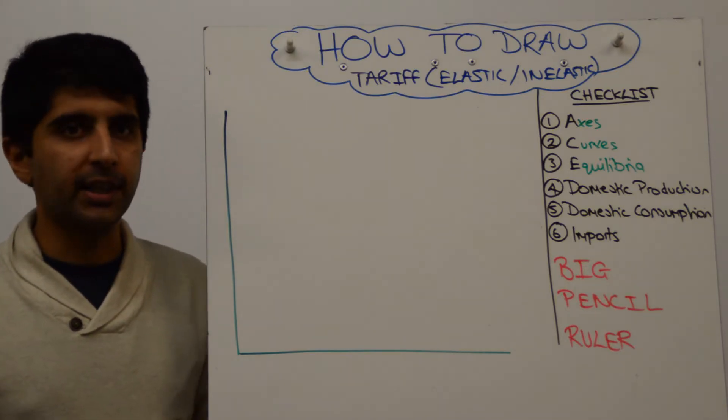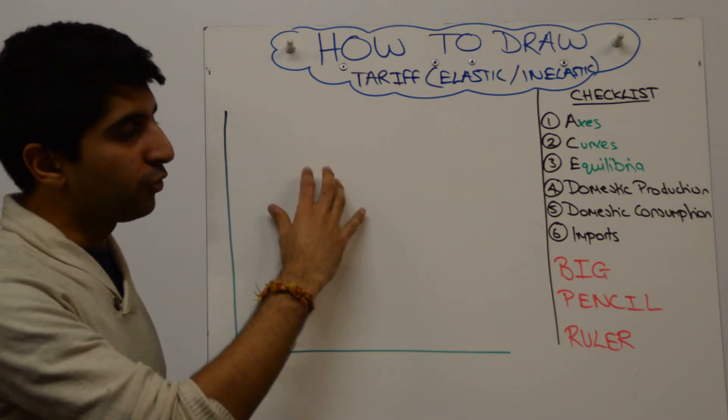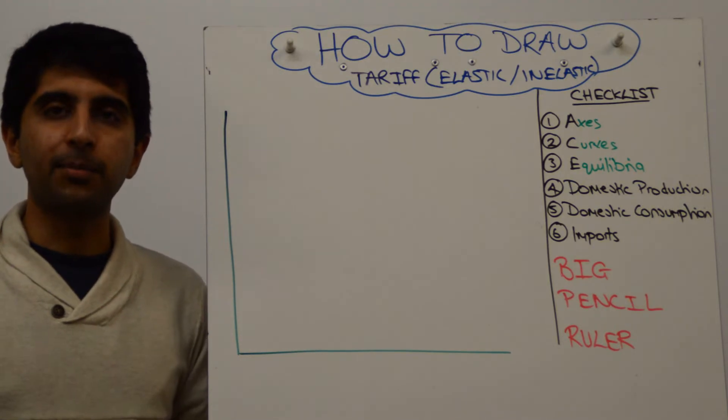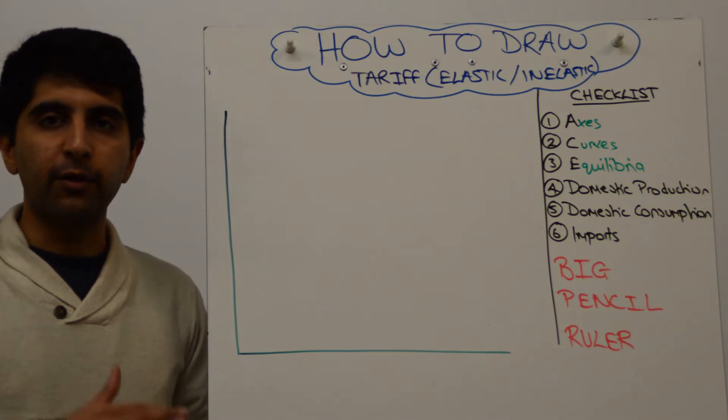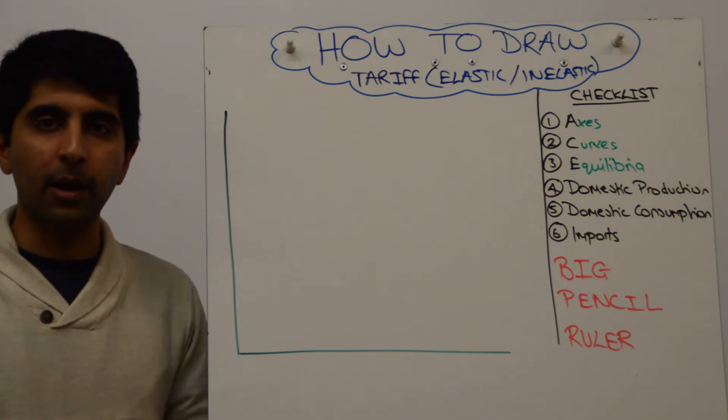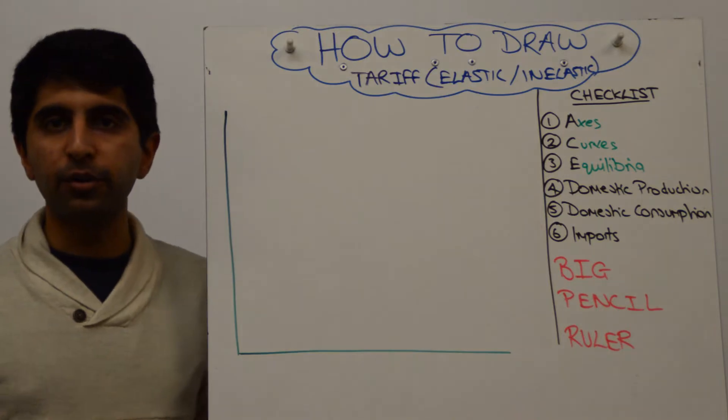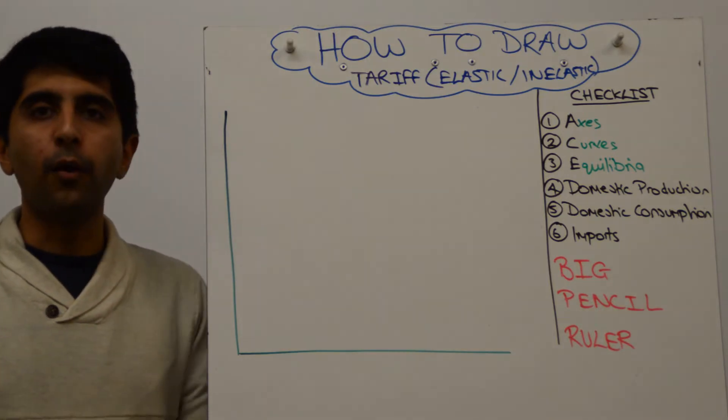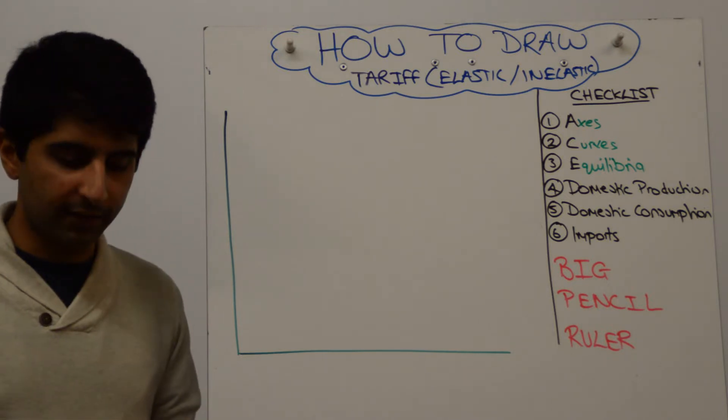How do you show that diagrammatically? Well, we are going to draw one, a diagram where we have inelastic demand and supply domestically, and then we'll draw a diagram where demand and supply is more elastic, and we'll see how the level of imports changes either dramatically when there's elastic supply and reduces, or it doesn't reduce very much at all when there's inelastic demand and supply.